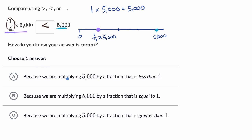So let's see these choices. Because we are multiplying 5,000 by a fraction that is less than one, yeah, that's exactly what's happening. We're multiplying 5,000 by one-fourth. So it's going to give us a smaller value than 5,000. I like that choice.